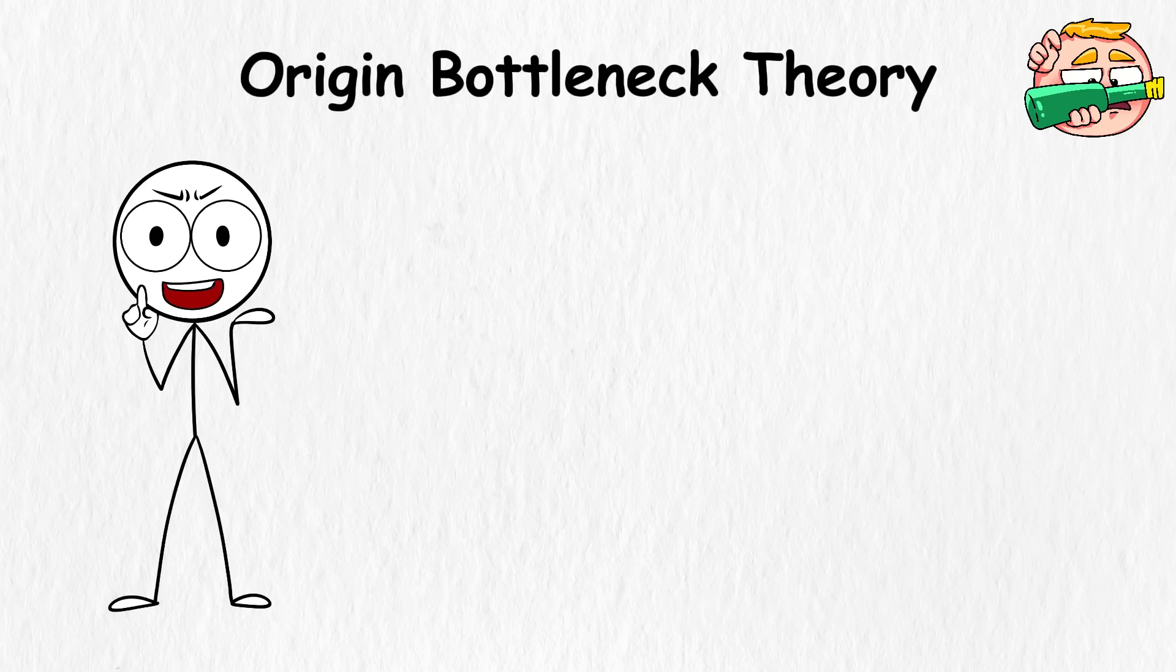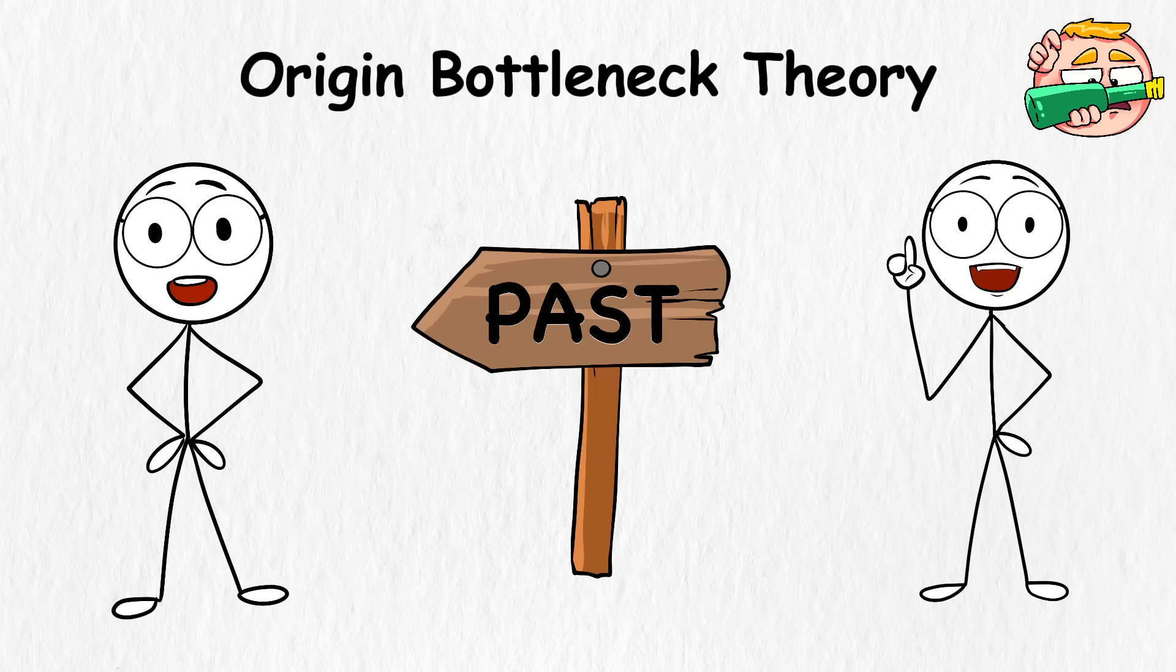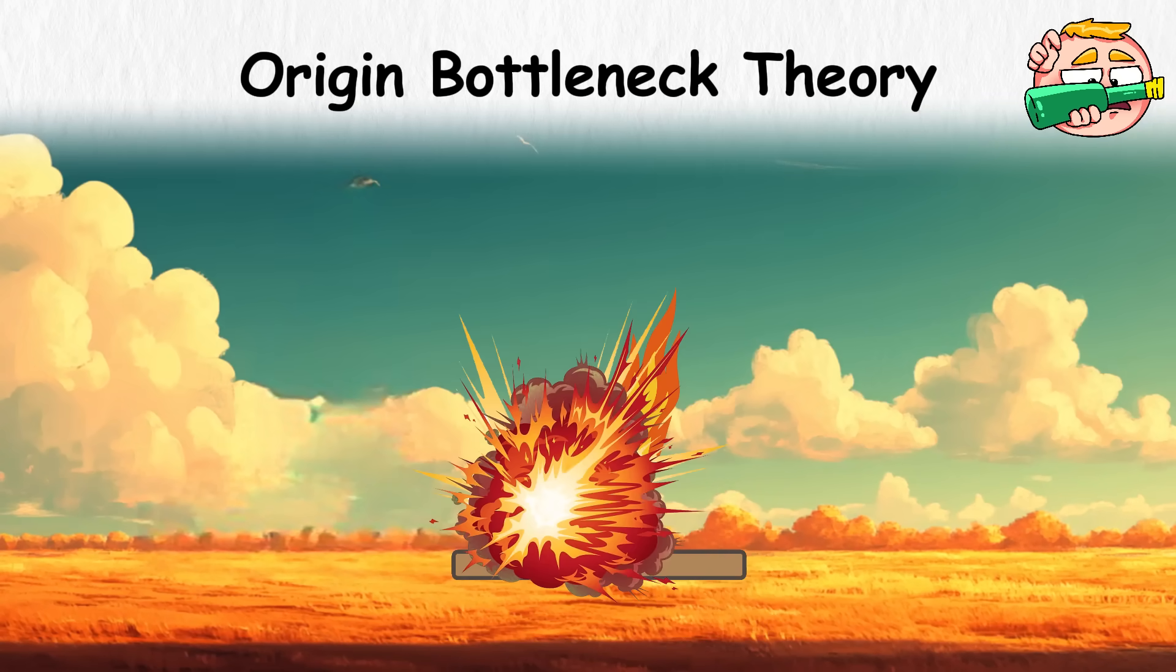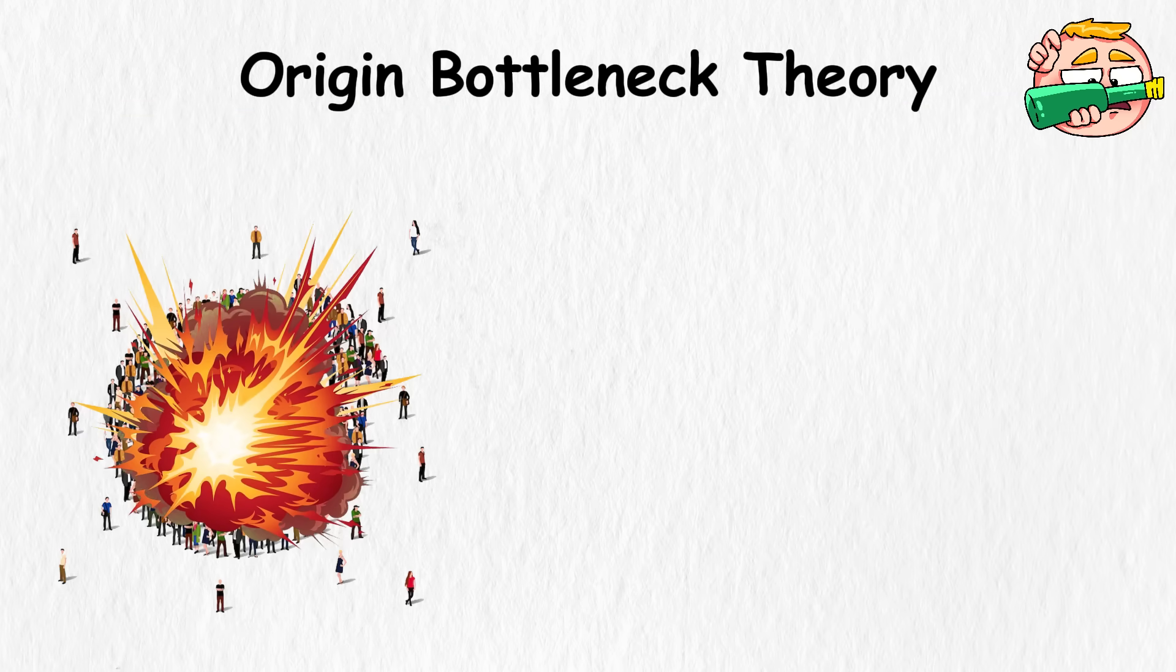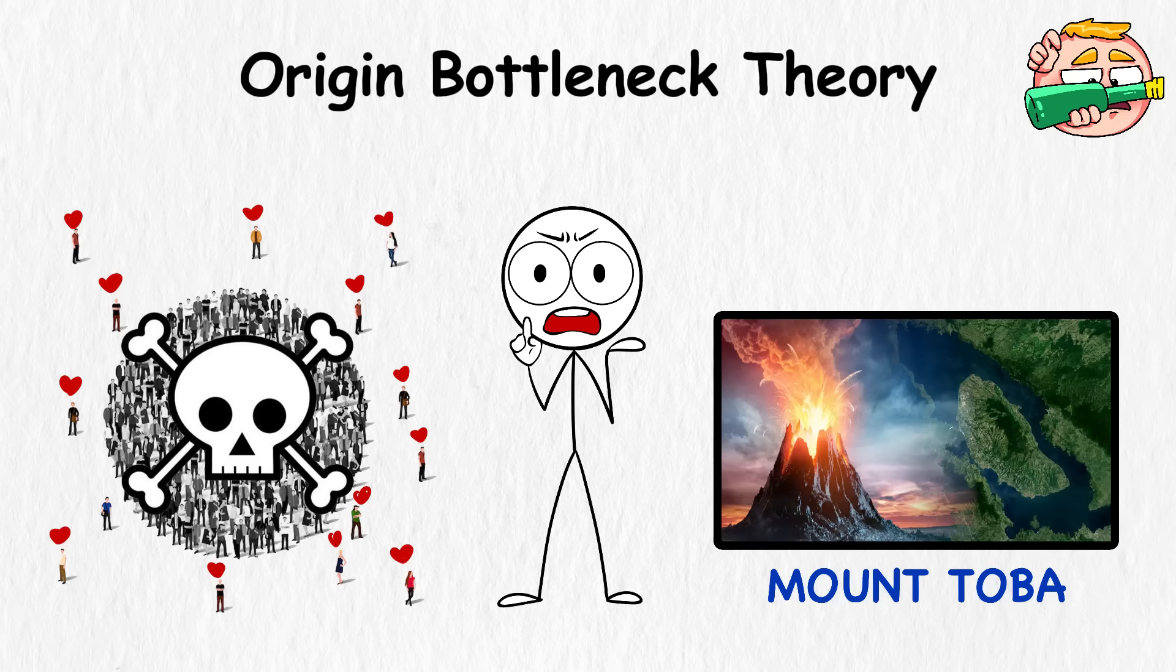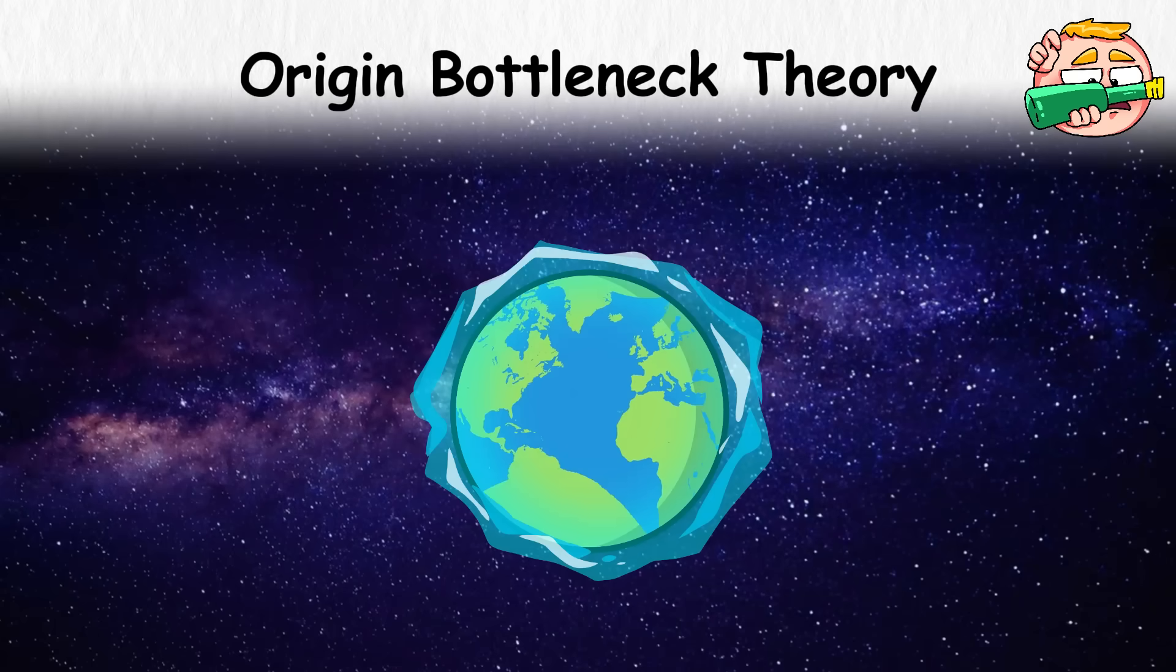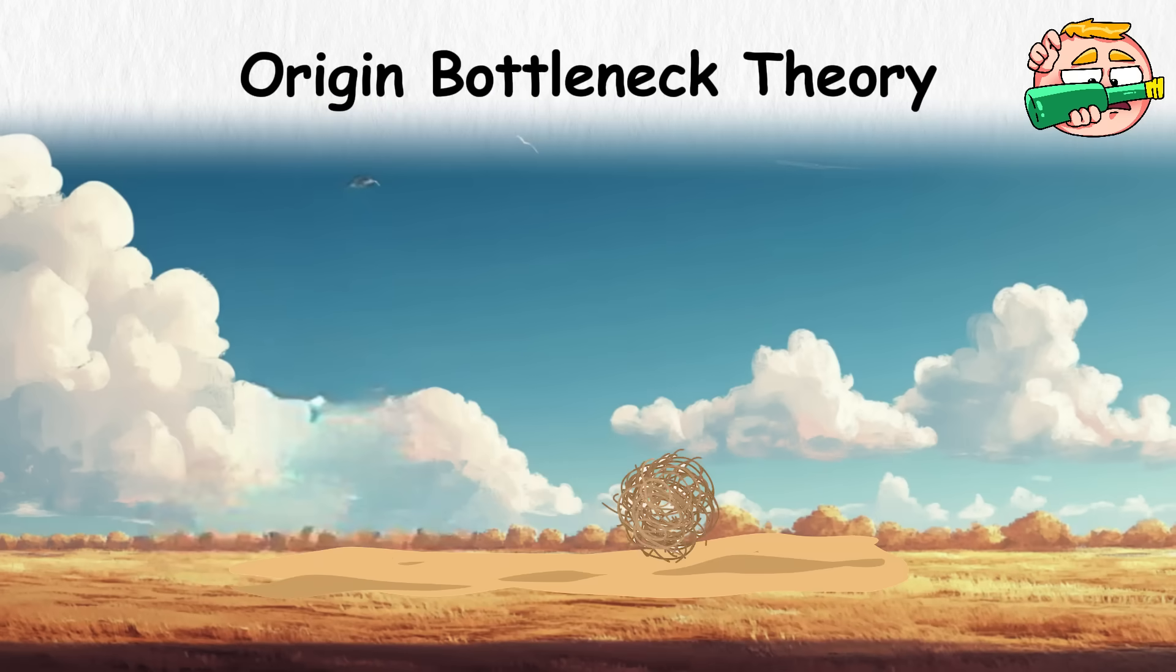Origin Bottleneck Theory. There's a theory that says humans nearly didn't make it. At some point in the distant past, something hit hard enough to push us to the edge. Populations crashed. Only a small group survived. One possible reason is a volcano called Toba. Around 74,000 years ago, it exploded with so much force that ash spread across the sky and sunlight disappeared for years. The planet cooled. Plants died. And the world got quiet.